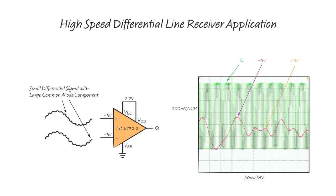This slide shows an LTC6752-2 operating from a single 2.7V supply with a 200 MHz, 200 mV peak to peak differential signal, riding on top of 1.2V of random, high-frequency common mode noise. The input signal is converted to a full scale 2.7V 200 MHz output.